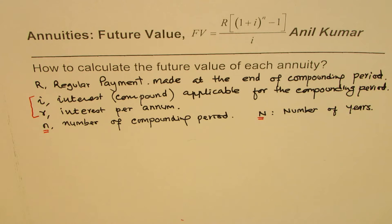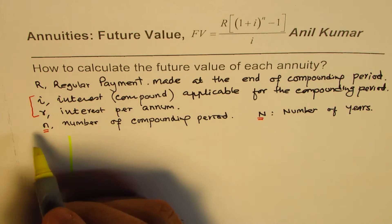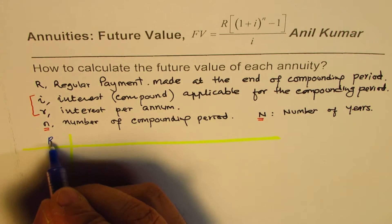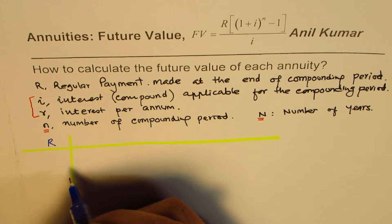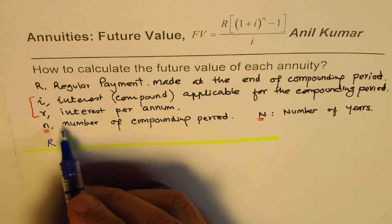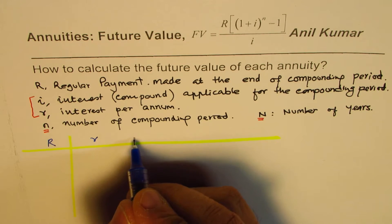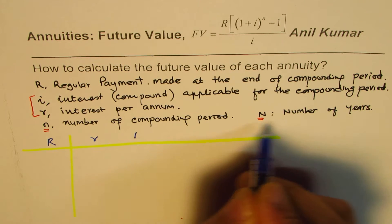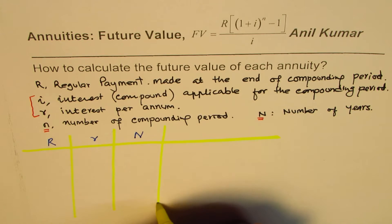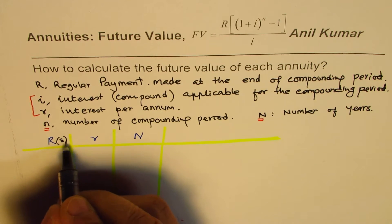Let me write down a table. The first column is regular payments R, which will be made at regular intervals of time. Then we'll have the interest rate r, and the time period — number of years N. We'll begin with these three values and then find the other values based on the compounding period.